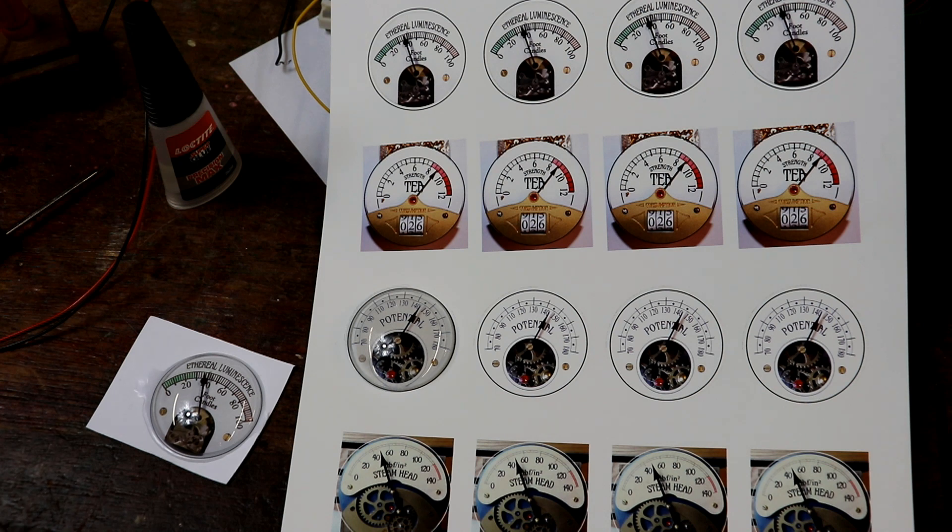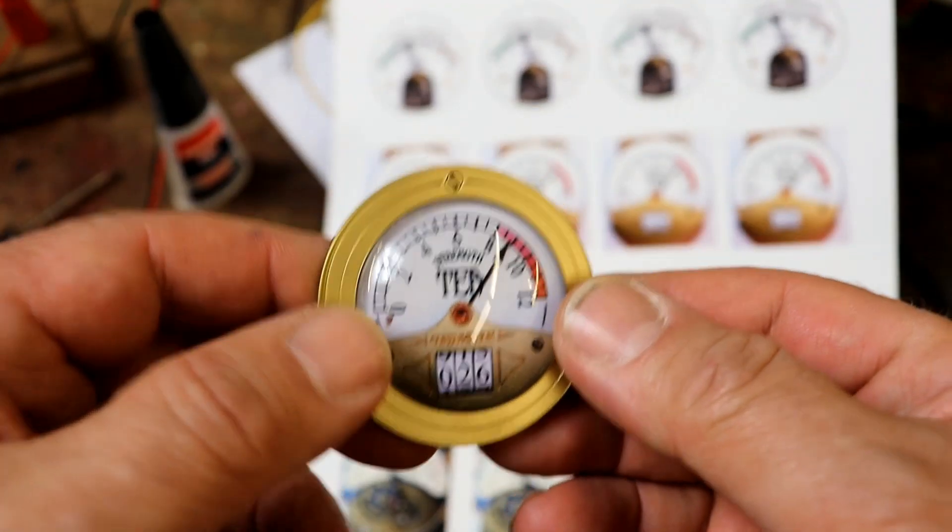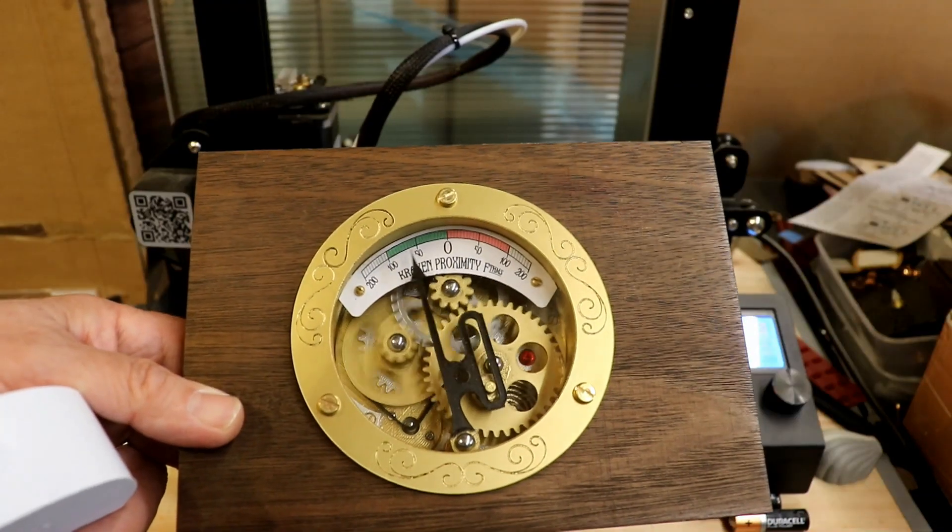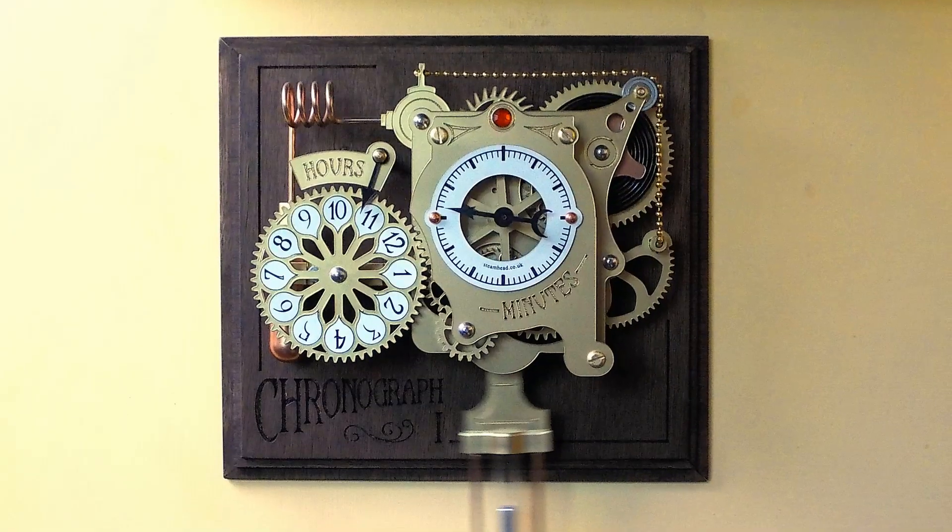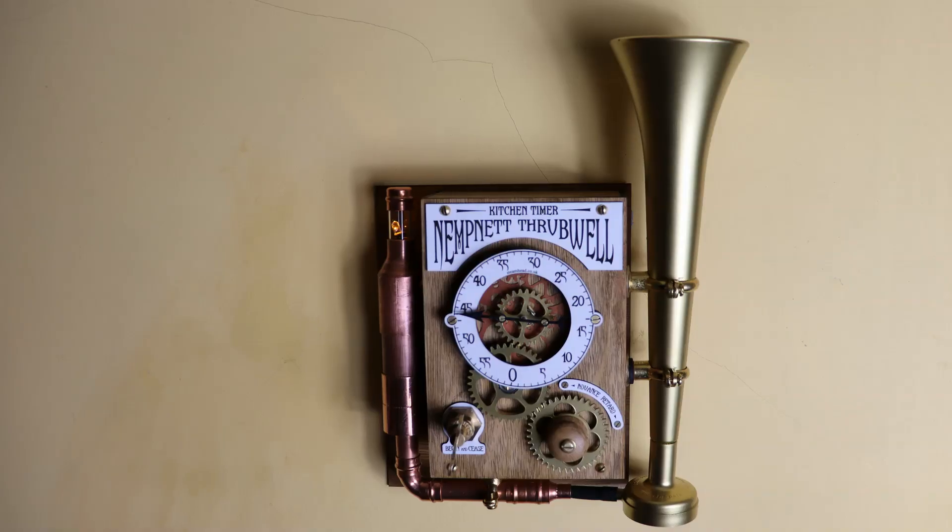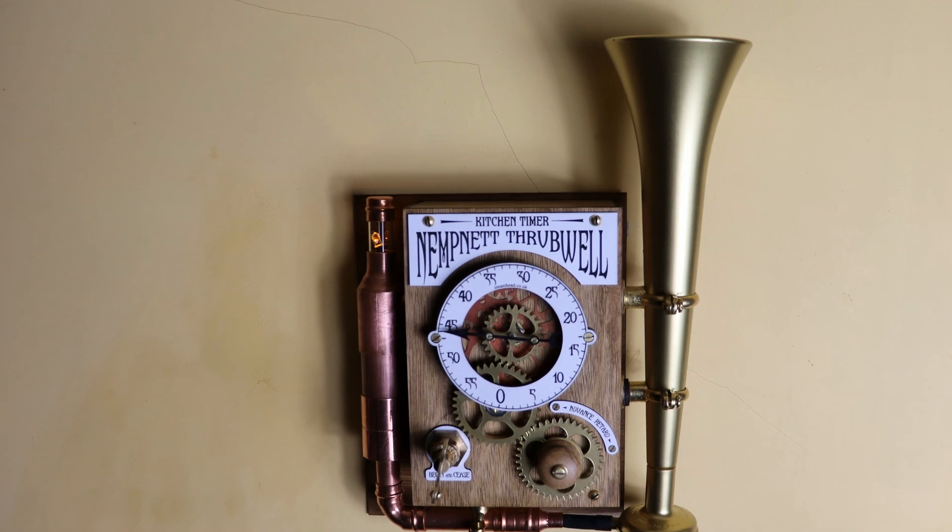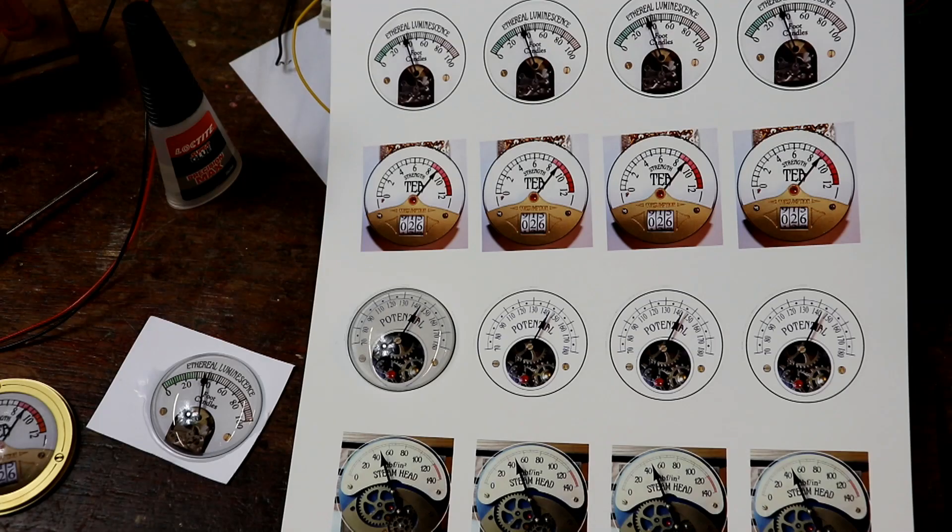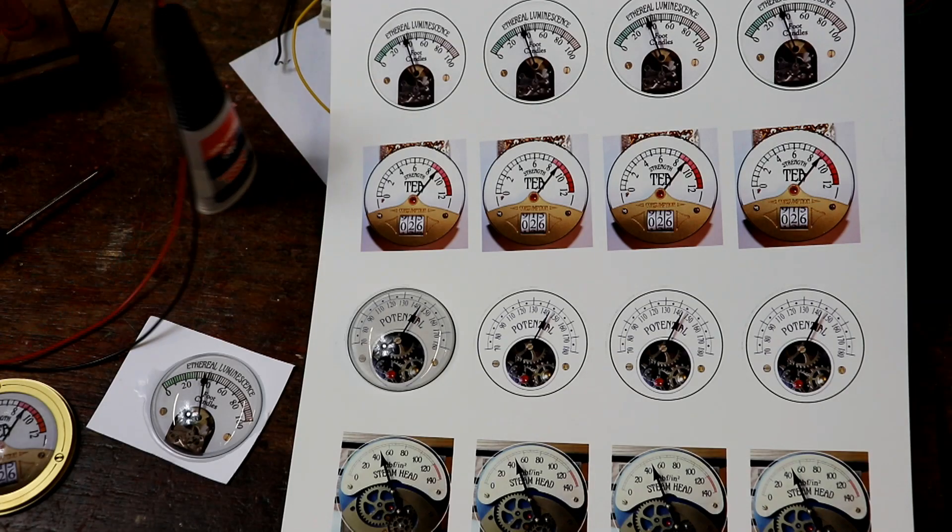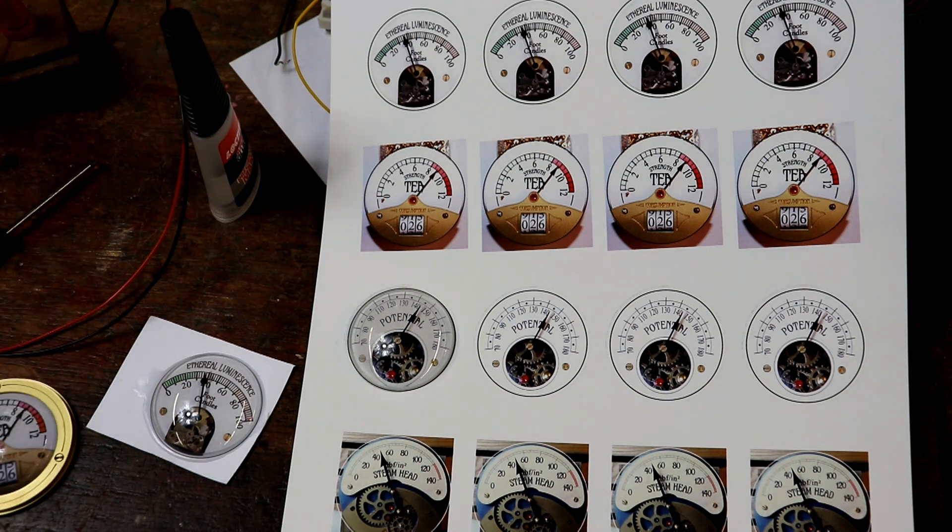There you go. And as always, I always forget! My lovely range of gauges and the Kraken Animated Gauge Kit and the Chronographs and the Nepnet Thribble Kitchen Timer Steampunk Kit are all available on my website and my Etsy shop. I will put the links in the description. I remembered. Thanks very much. Let's get on with Victoria.